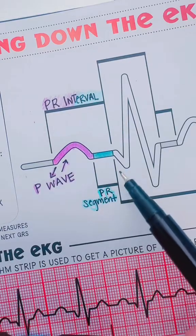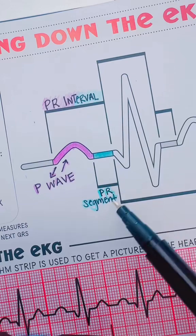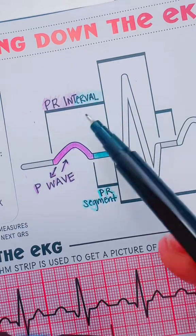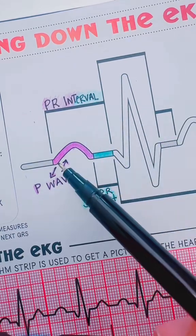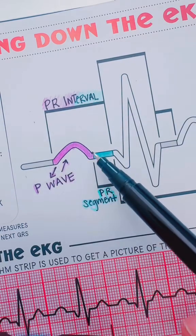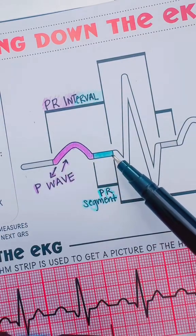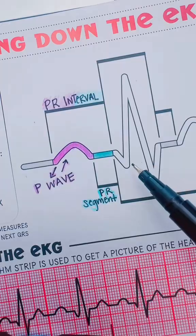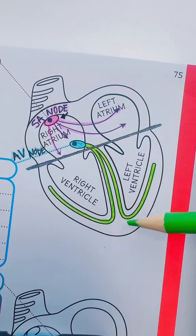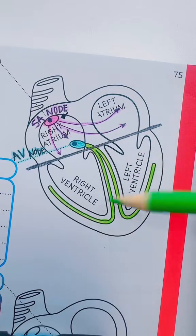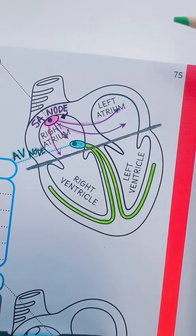So the time of the AV node holding on to this electrical delay is known as our PR segment, and this PR interval is the start of when the electricity was fired, the atria is contracted, and the AV node holds it before the electricity is sent down into the ventricles and tells the ventricles to contract or push blood out of the heart.